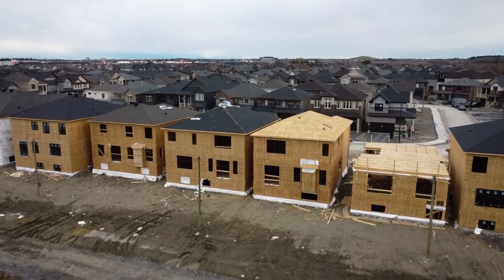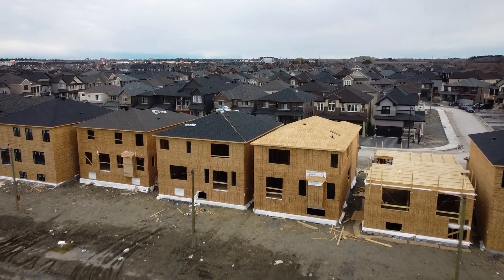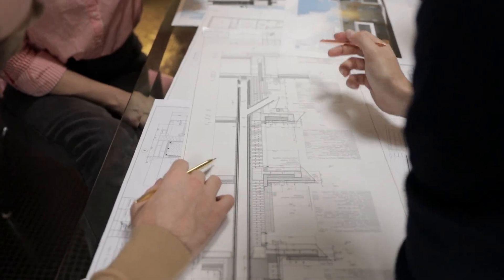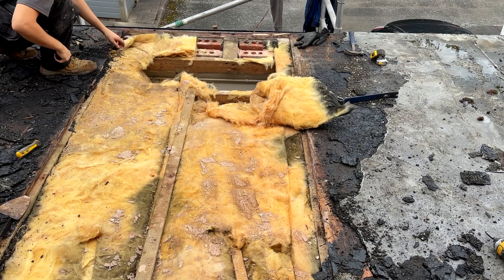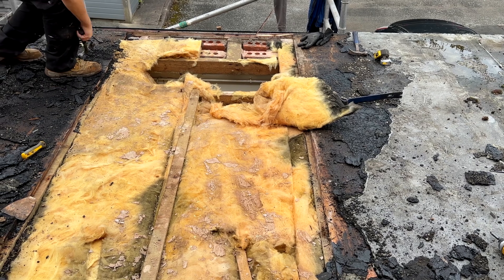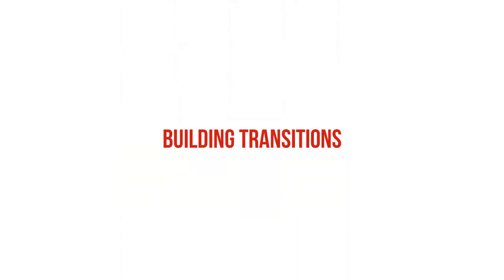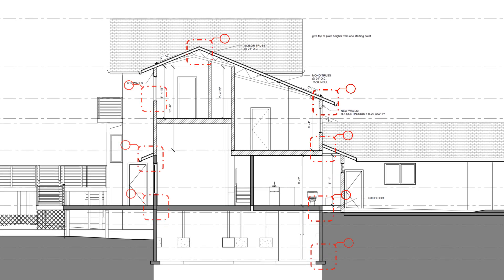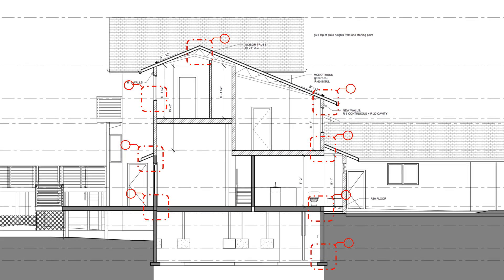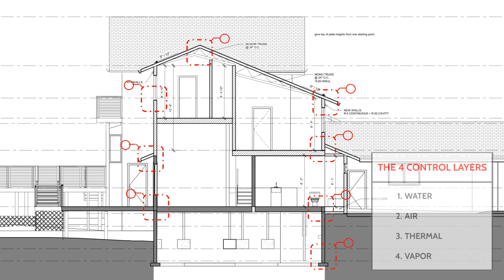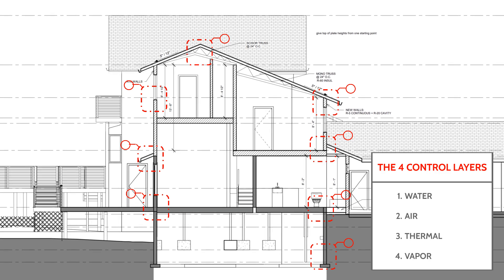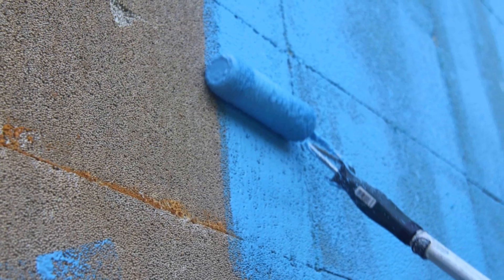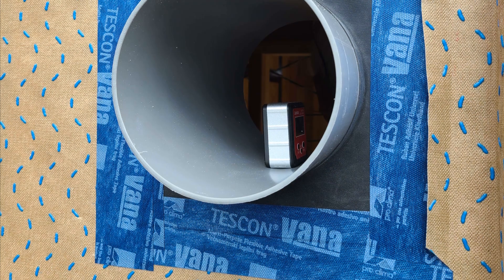So what do we look out for when it comes to assessing a building, either in the design phase or after the building has been constructed post-moisture failure? It's always at the building transitions. Building transitions are locations where we have discontinuities between our control layers — the water, air, thermal, and vapor control layers — but most importantly, we're concerned about water and air control continuity.